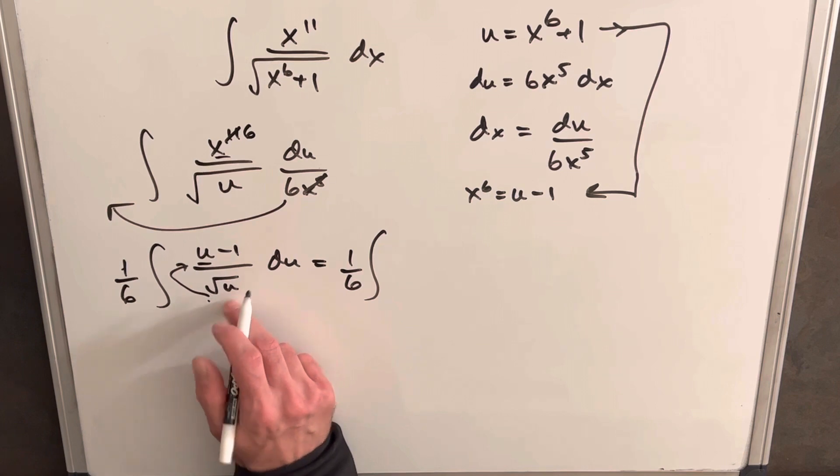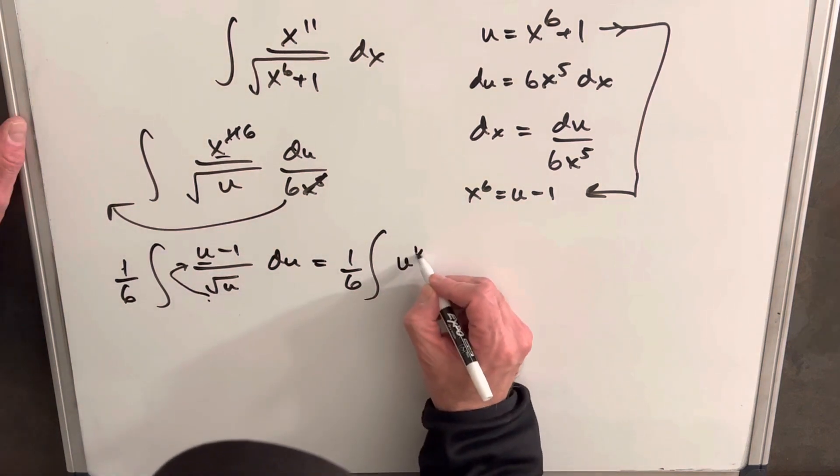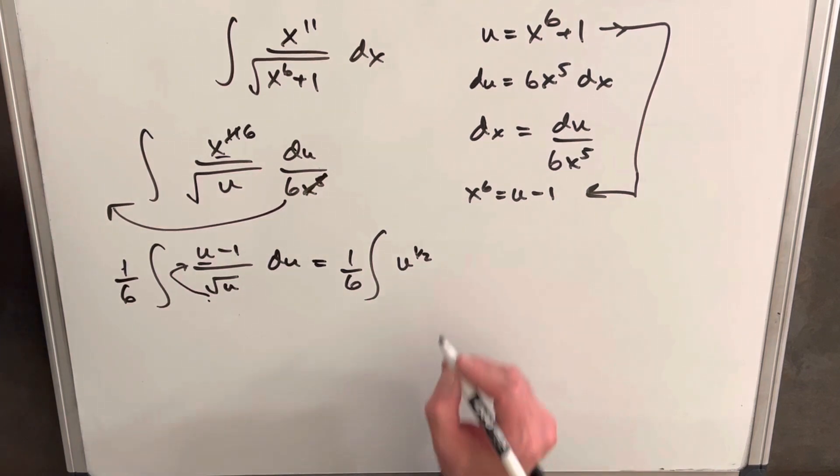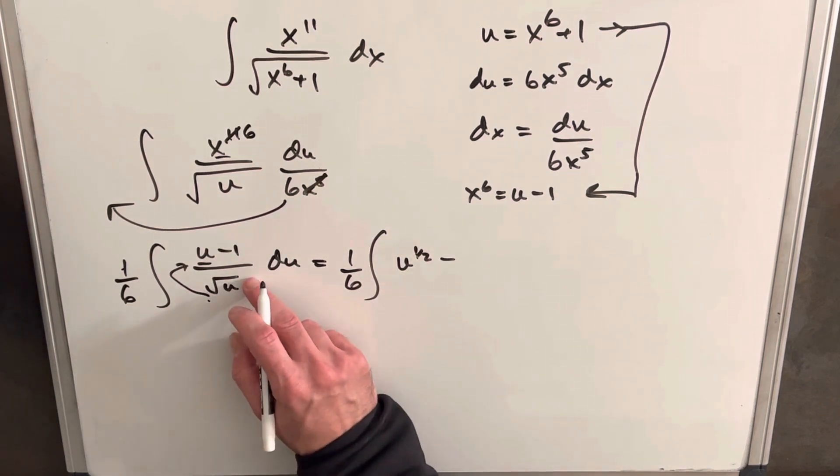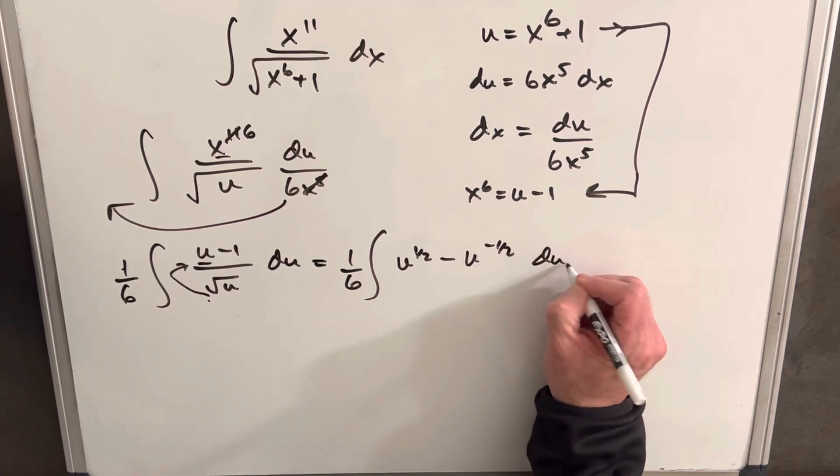So u divided by square root of u is going to be, I'm going to write this as u to the 1 half, because like I said, we're going to use the power rule. And then a minus 1 over square root of u is going to be u to the minus 1 half du.